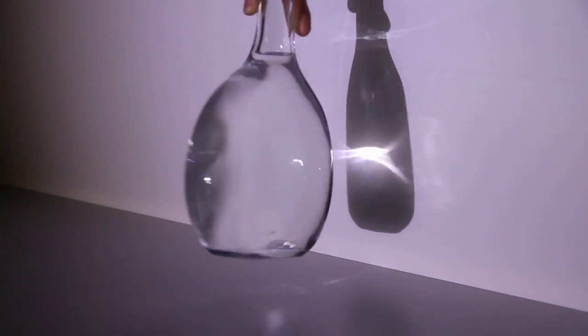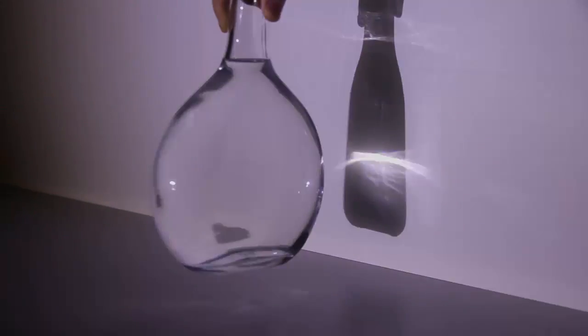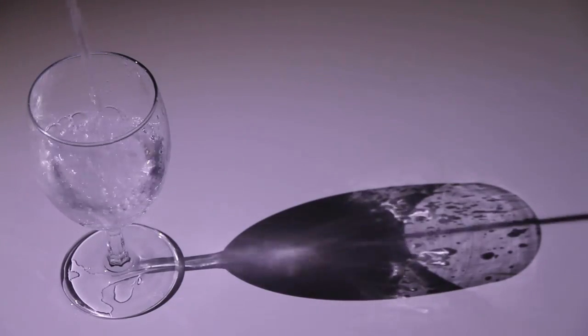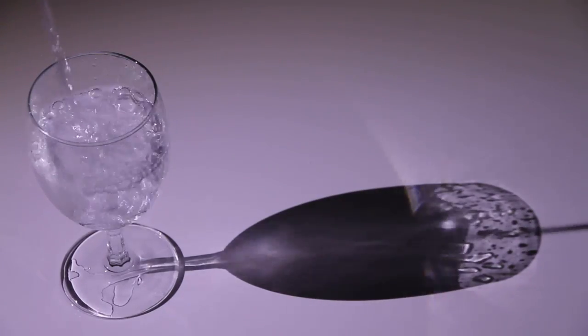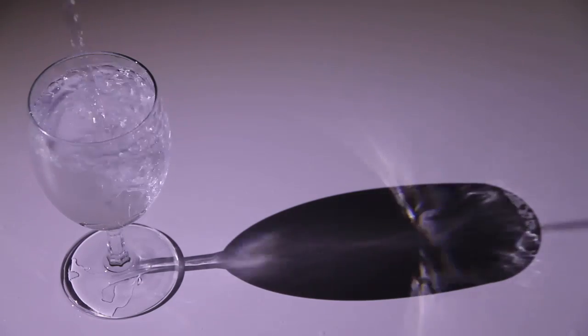Caustics are captivating light patterns created by materials focusing or diverting light by refraction or reflection. We know caustics as random side effects, appearing, for example, at the bottom of a swimming pool or next to a glass of water.